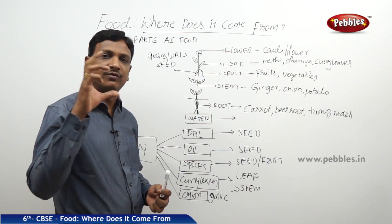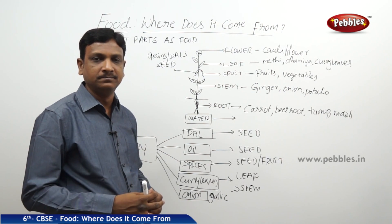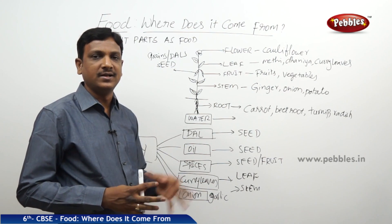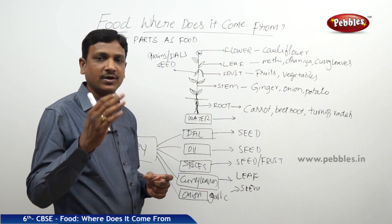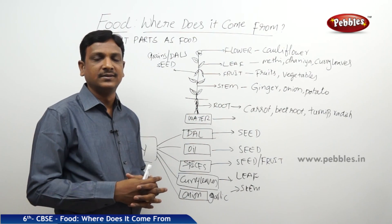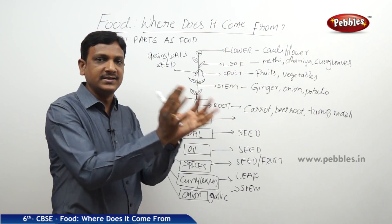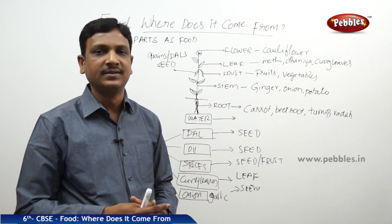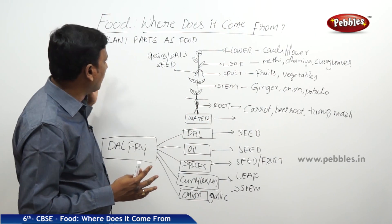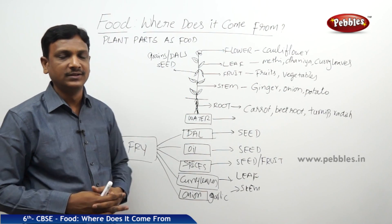Now you can take any one food item and make a list of the ingredients. If you don't know, ask your mom — she is an expert. She makes so many items for you every day. Take one of your favorite items, ask what the ingredients are, then identify from which part of the plant each ingredient comes. Fill in a table and you will be totally aware of the concept.